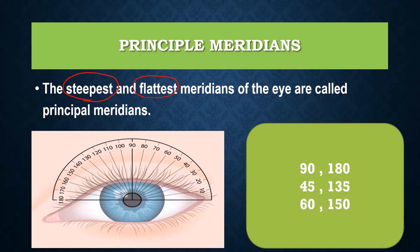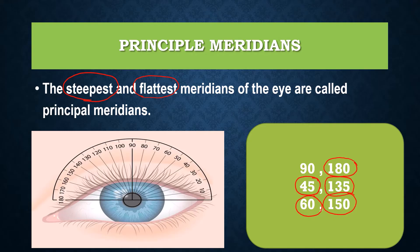In a regular astigmatic eye, the principal meridians will usually be at a difference of 90 degrees apart. So if one meridian is at 90 degrees, the other will be at 180 degrees. If one is at 45, the other will be at 135. If one is at 60, the other will be at 150. So in regular astigmatism, the two principal meridians are always about 90 degrees apart.